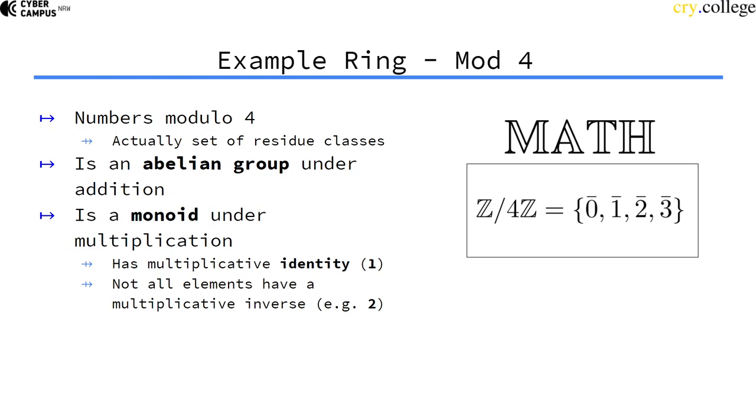Another example that's quite important for cryptography is numbers modulo. As we have seen, this is the ring consisting of the set of residual classes. The underlying set is 0, 1, 2, 3, but these are just residual classes. For example, the 2 is not a 2, but is a class of all numbers of the form 2 plus a multiple of 4. This actually is also an abelian group under addition because all residual classes are inverse to themselves again.